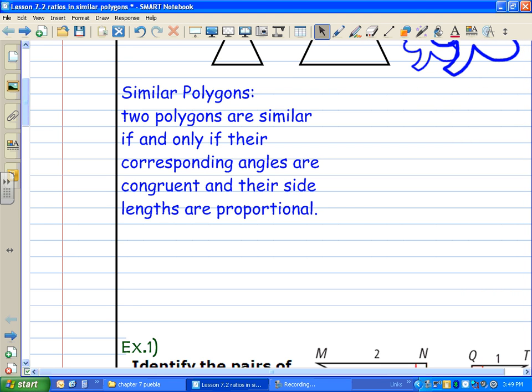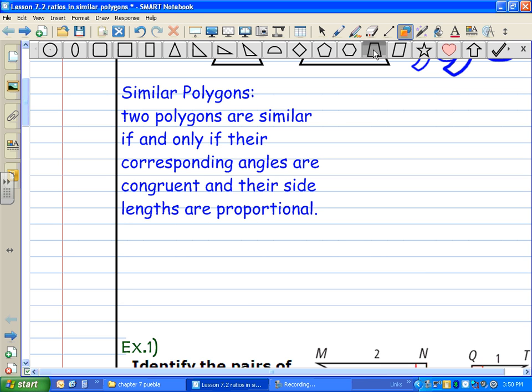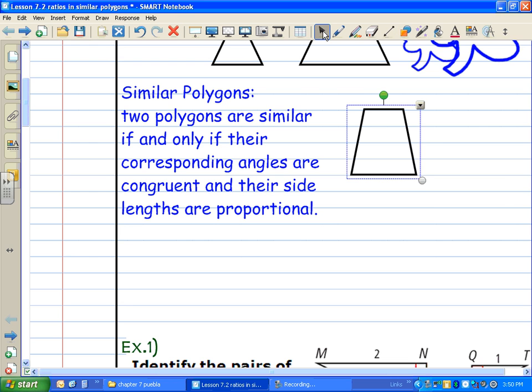So what are similar polygons? Two polygons are similar if and only if their corresponding angles are congruent and their side lengths are proportional. Let me show you by drawing a trapezoid. You can draw this along with me as well. I'm going to draw this small one, and now I'm going to clone this and make it bigger. These two shapes are similar, not congruent, but similar.